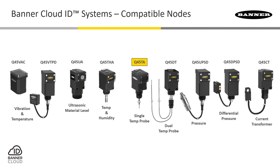We also have two versions of a temperature probe sensor that can be used to measure temperatures in key areas or processes like air and liquid handling applications. We have a single probe for those cases that just require a single data point, and a dual temperature probe for those situations that also require a differential temperature measurement — for example, the supply and return air of an HVAC system.